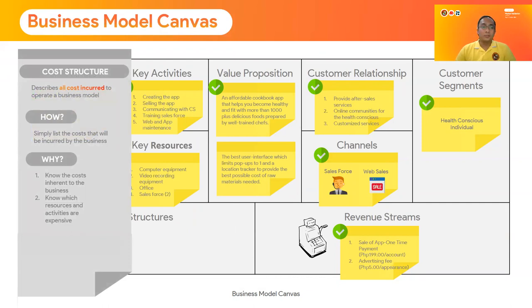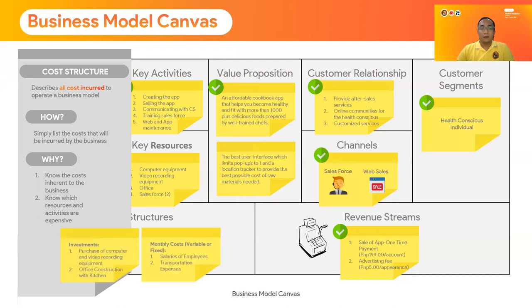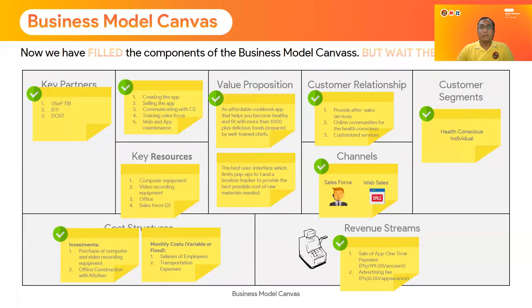The last component is the cost structure — the cost incurred to operate a business. Simply list all costs that will be incurred by that business so you know which resources are expensive and where you can adjust. In our example, investment costs include purchase of computer and video recording equipment and office construction with kitchen. Monthly costs include salaries of employees and transportation expenses. Now we have created a picture of your full business model canvas. But wait, there's more.